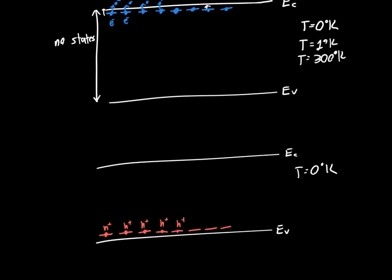Then as we start to raise the temperature a little bit, a couple of them are going to start to be able to escape. And then as we get to room temperature, almost all of them have enough energy to escape into the valence band and start conducting electricity.